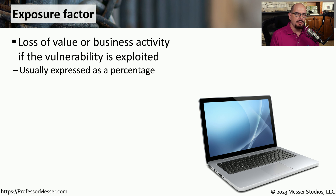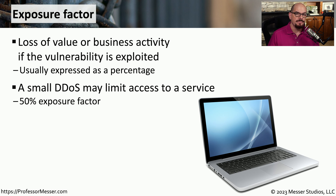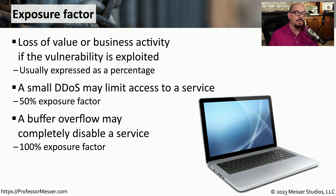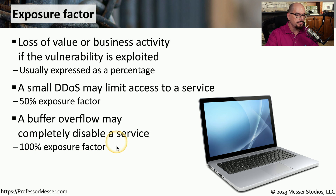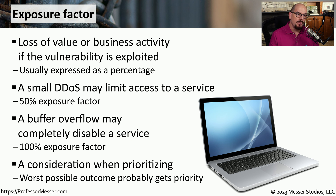Once we've identified a vulnerability in our network, we want to understand how risky it might be to have that vulnerability existing on those systems. One of the ways to quantify that is with an exposure factor, which is usually represented as a percentage. For example, if a vulnerability might cause a particular service to become unavailable half the time, we specify a 50% exposure factor. Or if a vulnerability has no patches, is on a public web server, and could completely disable a service if exploited, we might consider that a 100% exposure factor. CVSS scores and your own exposure factor numbers can help you prioritize fixes, especially if you have limited resources.